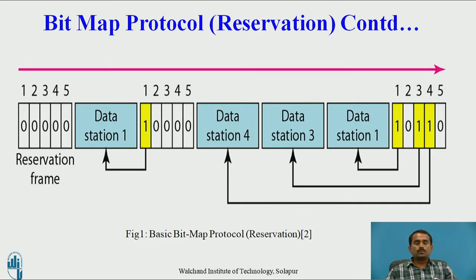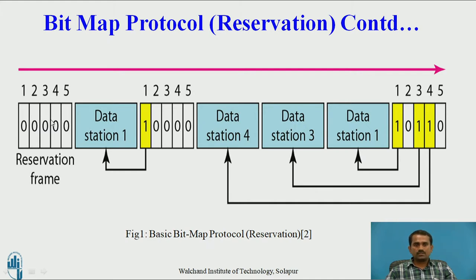What is reservation? Before transmitting data from one station to another, the current station has to reserve space in the next station. Then after transmitting the data, the data directly goes to that particular reserved station and is stored there. For example, here there are five reservation frames — one, two, three, four, five. The user wants to store data in the first reserved place. After transmitting the data from the reservation frame, the data is stored directly in the reserved place.